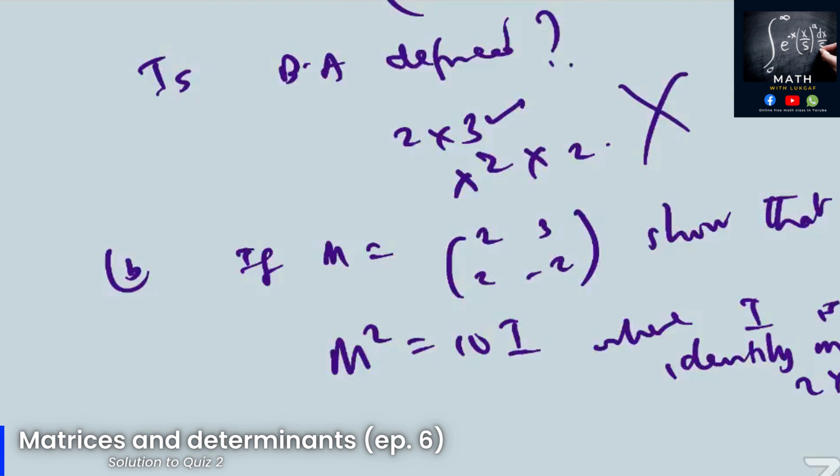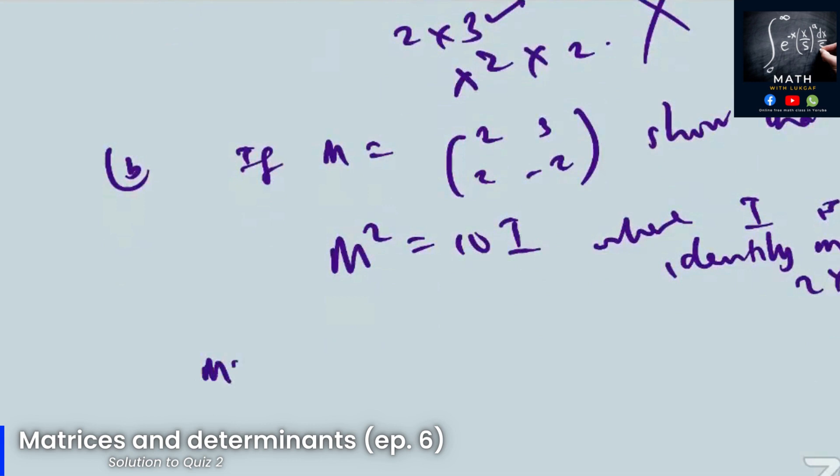M squared, you can say M times M. I'm going to tell you M times M. 2, 3. So 2 times 3. 2, 3, 2, -2.